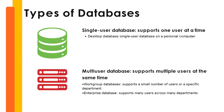Now let's talk about the different types of databases. First, we have a single-user database — a database that supports one user at a time. A typical example is a desktop database, which is only accessible on a personal computer. Next, we have a multi-user database, which supports multiple users at the same time. This includes a workgroup database, which supports a small number of users or a specific department, and an enterprise database, which supports many users across many departments.